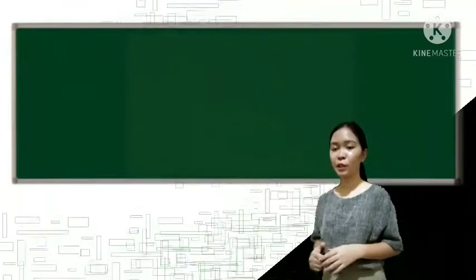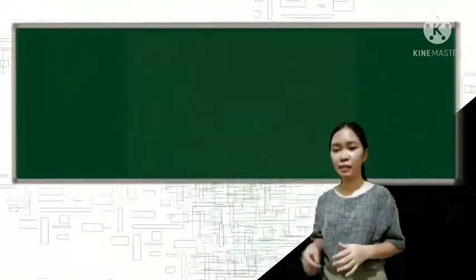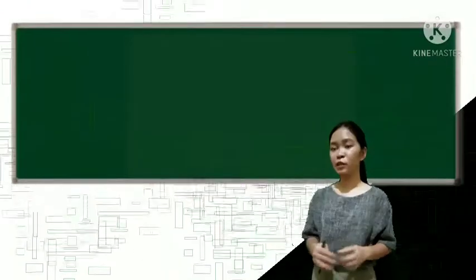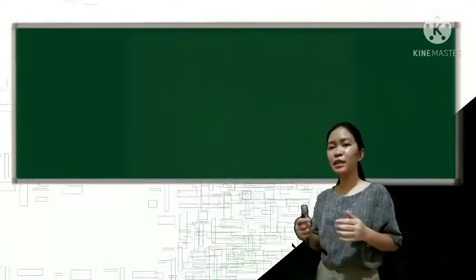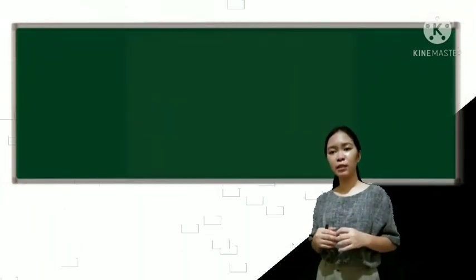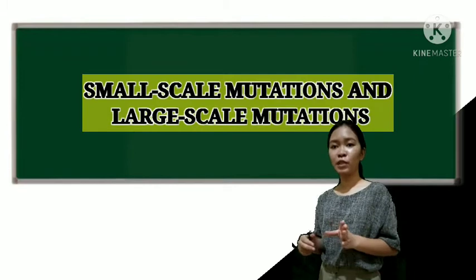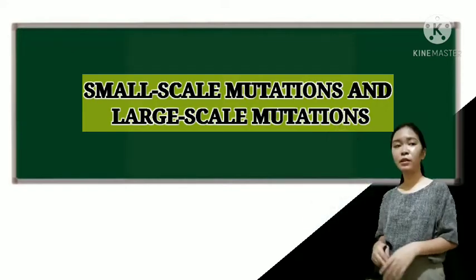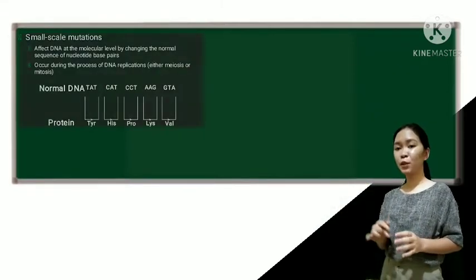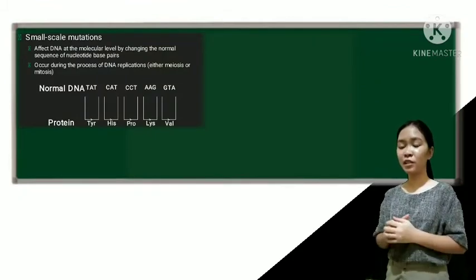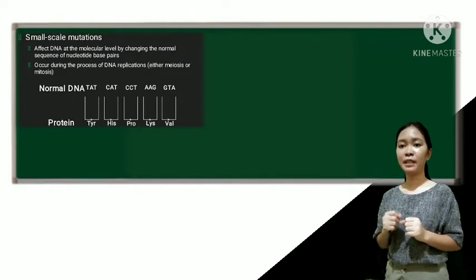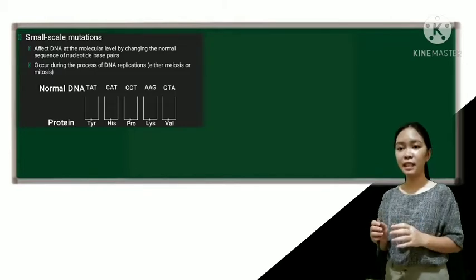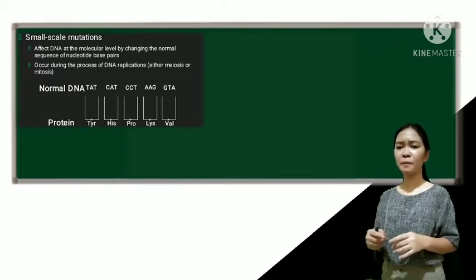Let's start with the types of mutations. So mutations can be classified in several different ways. So in this lesson, we will focus on sorting mutations by their effects on the structure of DNA or a chromosome. So for this categorization, mutations can be organized into two main groups. So the two general categories are what we call the small-scale and the large-scale mutations. So when we say small-scale mutations, these are those that affect the DNA at the molecular level by changing the normal sequence of nucleotide base pairs. Okay, so these types of mutations may occur during the process of DNA replication during either meiosis or mitosis.